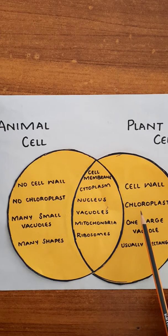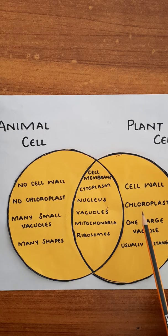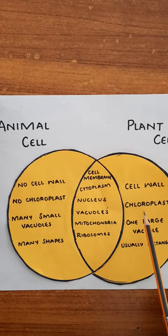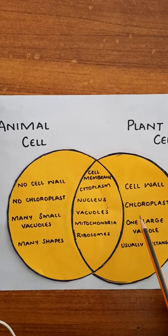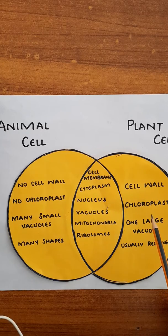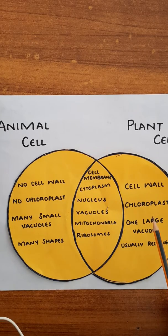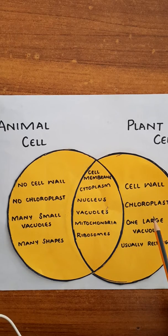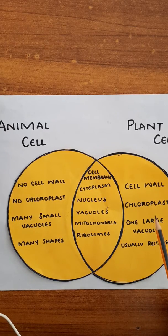Then we have the chloroplast. Chloroplasts are disc-like organelles which contain a green pigment called chlorophyll. Chlorophyll traps sunlight energy, and this energy is needed by the plants during the process of photosynthesis.